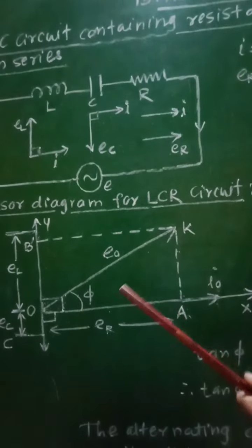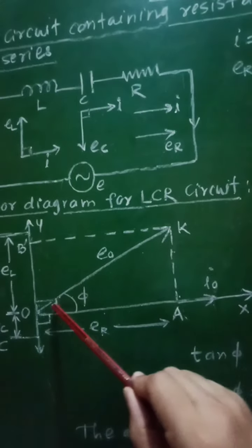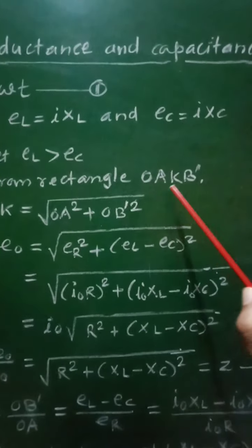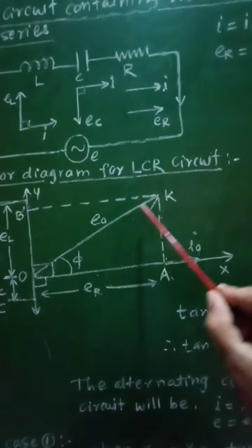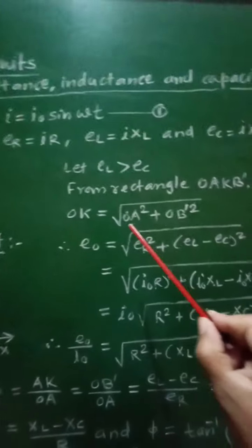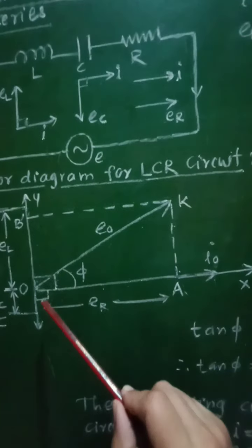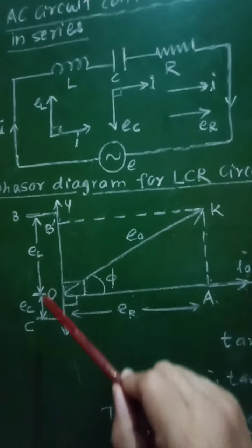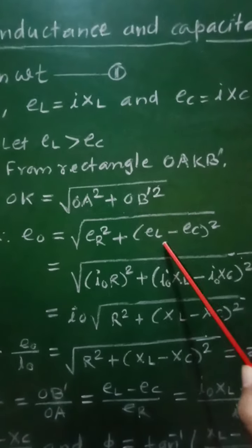Applying Pythagoras theorem to the right-angle triangle in rectangle OAKB', we can write OK = √(OA² + OB'²). Putting in the values, E₀ = √(ER² + (EL − EC)²). Substituting ER = I₀R, EL = I₀XL, and EC = I₀XC, we get E₀ = √((I₀R)² + (I₀XL − I₀XC)²).